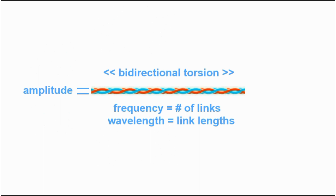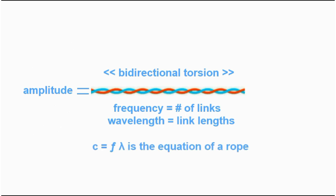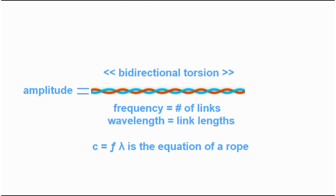Torsion is one of the fastest things you can imagine and explains the cause behind the fantastic speed of light. But what induces the rope to torque?